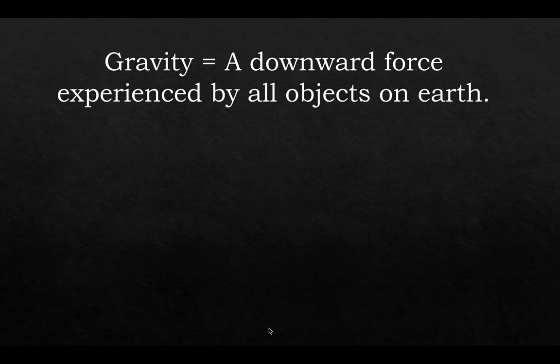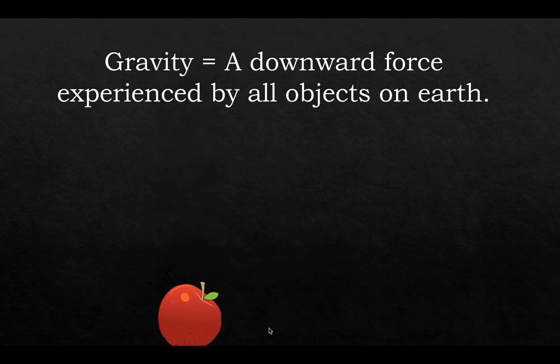Gravity is a downward force experienced by all objects on Earth, so the apple falls to the ground because it's pulled down by gravity. Note that gravity is also present on the moon and on Mars. A common misconception is that there's no gravity on the moon, but that's not true. There is gravity on the moon — there's just less gravity on the moon than on Earth because the moon is smaller. The Earth has a bigger gravitational pull because it's a bigger object.